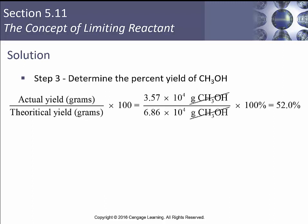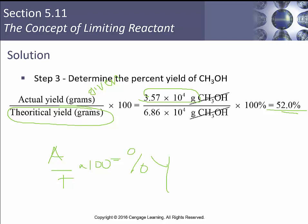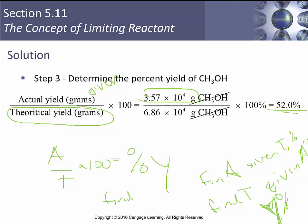Then you calculate the percent yield: take your actual grams, which is given as 3.57 × 10⁴, and divide by your theoretical yield of 8.6 × 10⁴, multiply by 100, and you end up with about 52% yield. There are other ways this question could be asked — you could be given actual and theoretical and find percent yield, or you could find the actual amount given the theoretical amount and the percentage, or find the theoretical yield given the actual amount and the percent yield. That's it for our stoichiometry.